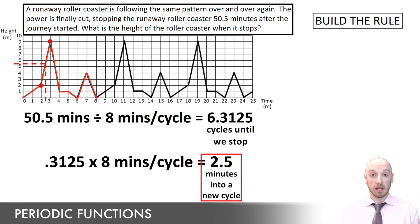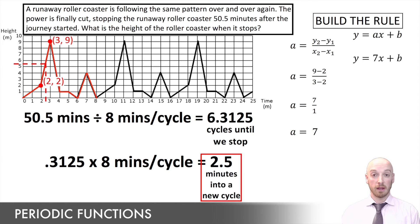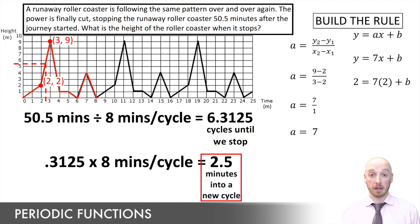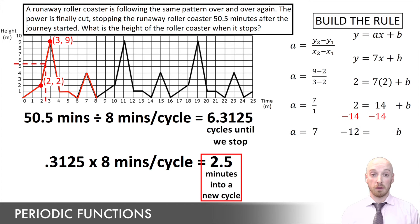The line we hit when reading up from x = 2.5 passes through coordinates (2, 2) and (3, 9). To find the rule, we first calculate the slope a: that's 7 over 1, or just 7. We plug 7 in for a into y = ax + b, and choose (2, 2) for x and y. We get 2 = 2 × 7 + b, which gives 2 = 14 + b. Subtracting 14 from both sides gives b = −12. So the rule is y = 7x − 12.